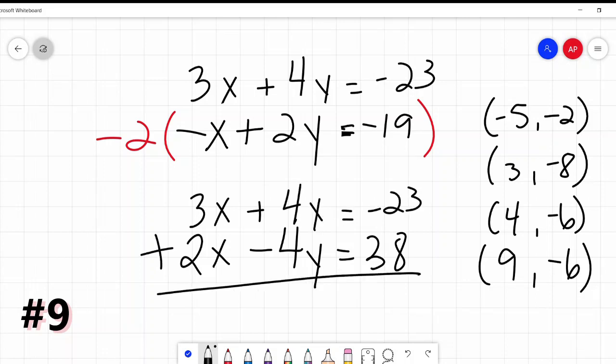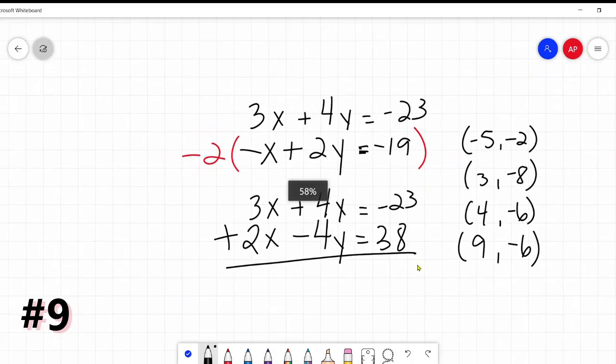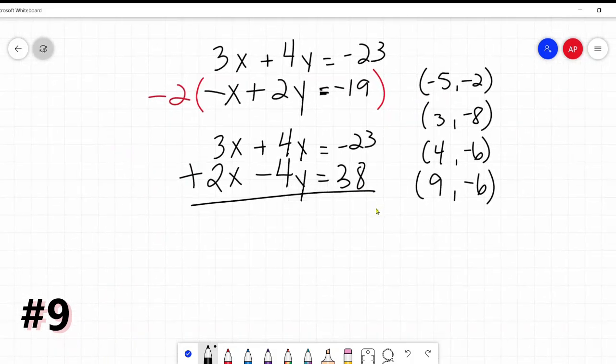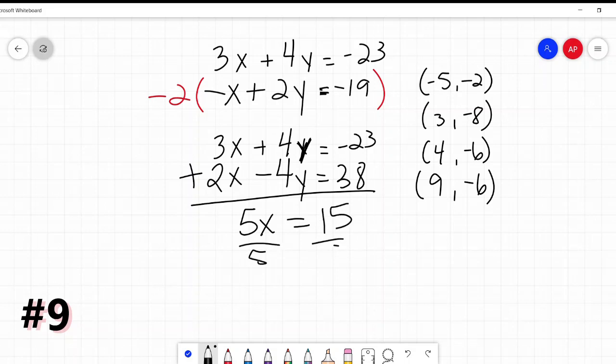I'm going to then add them together, and then my y's cancel out. 3x + 2x is 5x, 4y - 4y is nothing, and -23 + 38 is 15. I can then divide both sides by 5 and x = 3. I now know my answer: it's (3, -8).